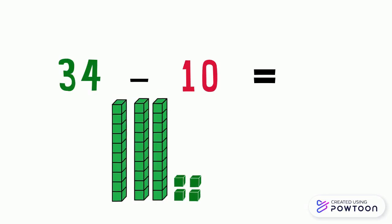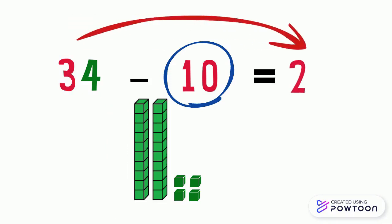So we should know that when we want to subtract 10 from a number, we should take away 1 ten from the tens digit. And the ones digit does not change.